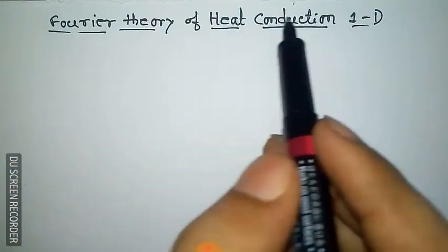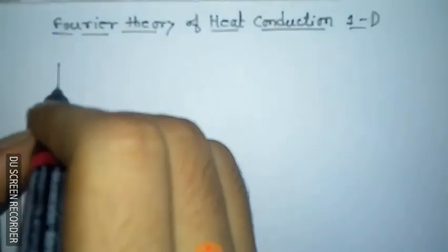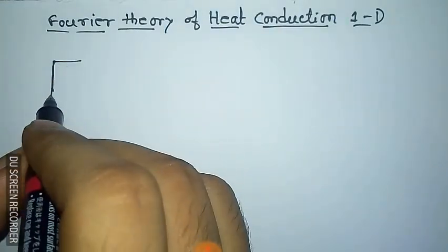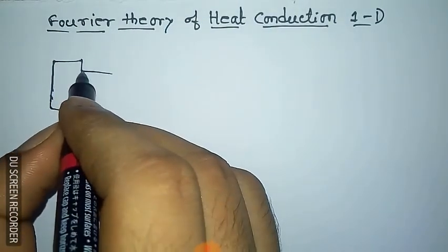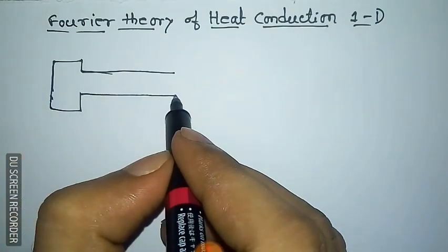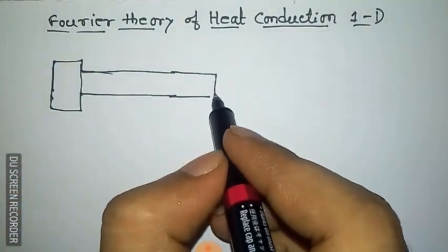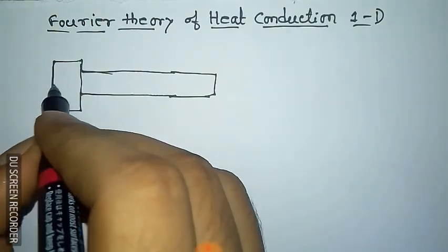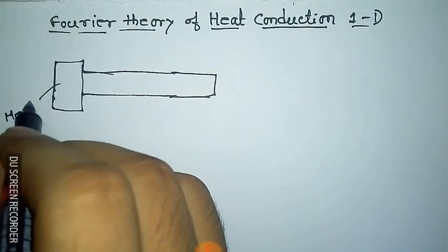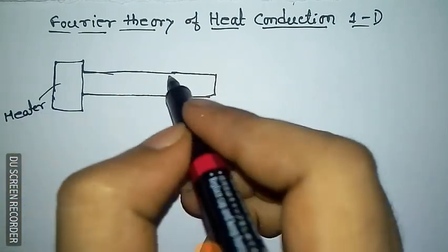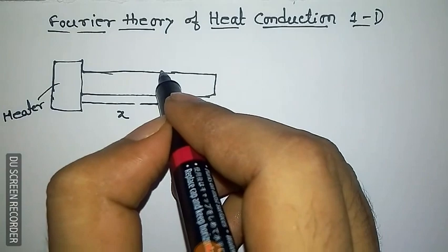Hello friends, today we shall derive the Fourier theory of heat conduction for 1D. For this we draw first a heater and a rod connected with it. The heater acts as a heat source and the rod is situated along the x-axis.